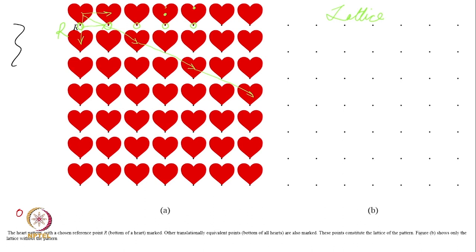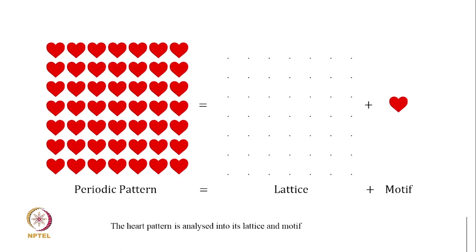I remove the hearts now because I want to focus exactly on what is the repeat structure. That gives me this square grid of lattice points. With each lattice point a heart is associated. The pattern was there and we extracted the lattice; from the lattice if I want to go back to the pattern I have to know what is being repeated. That is additional information not in the lattice. That is why for the pattern we require both lattice and the motif.